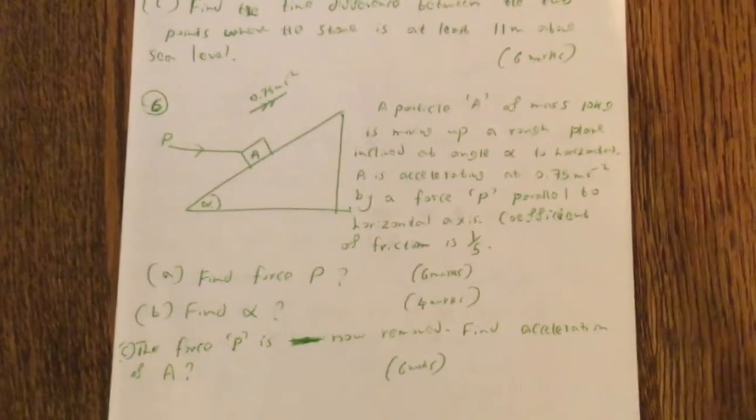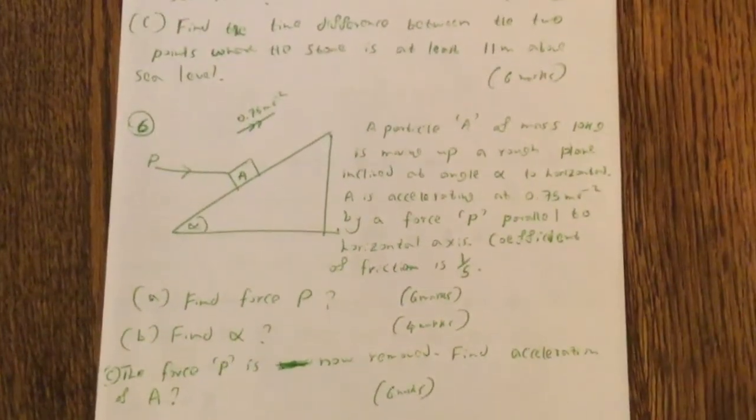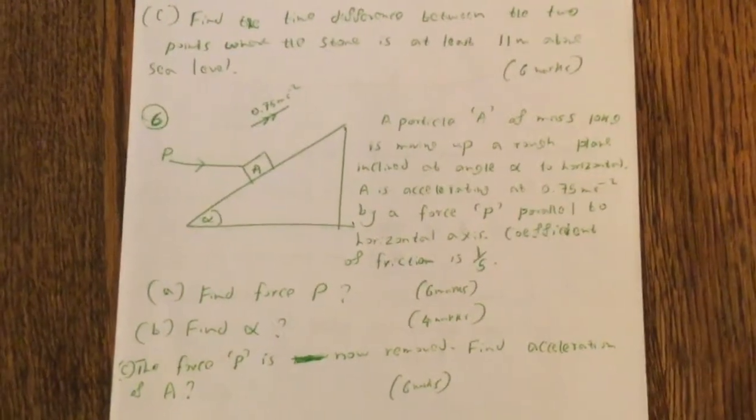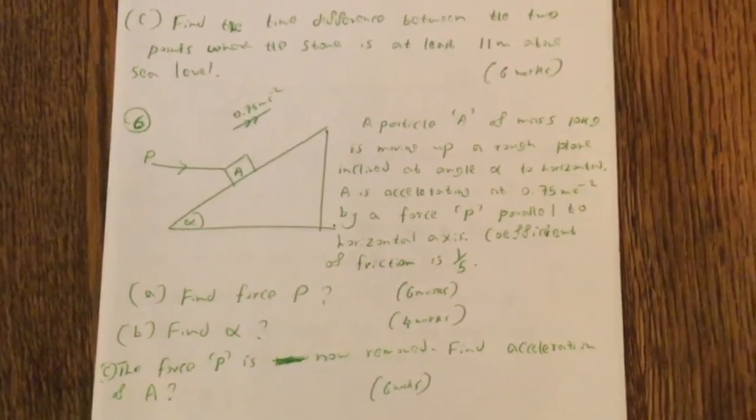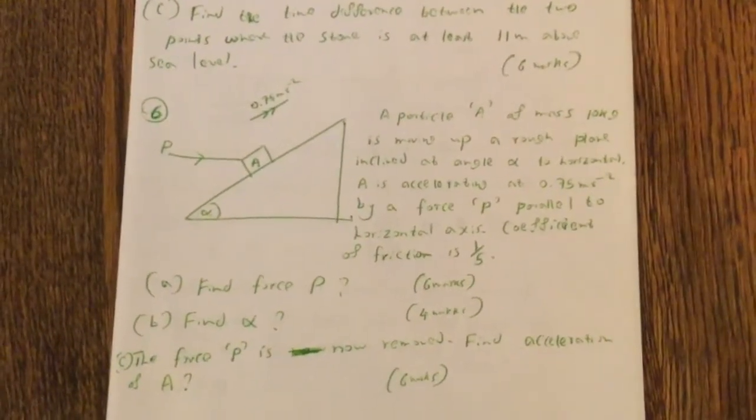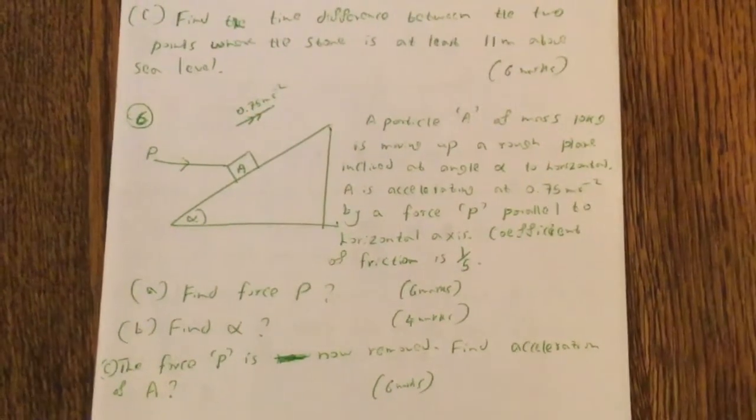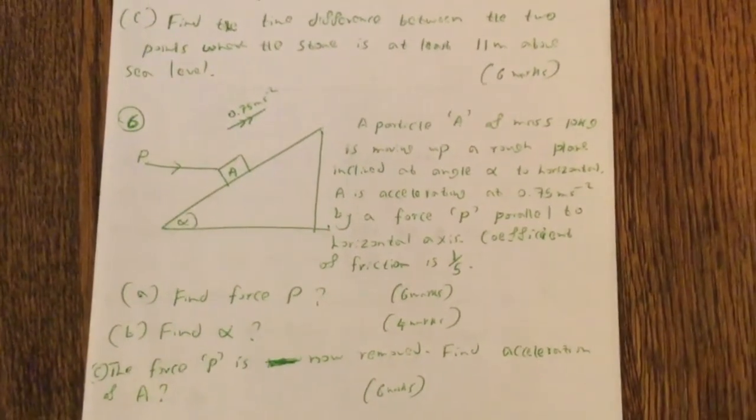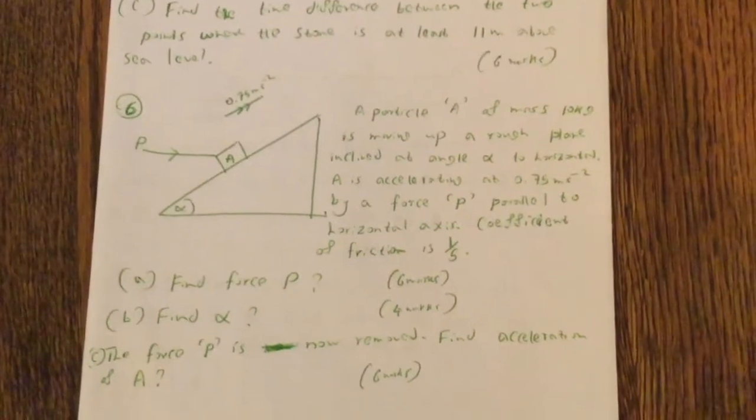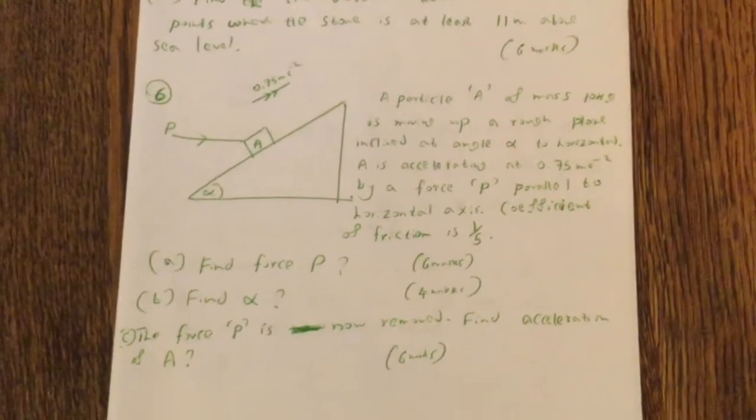A particle A of mass 10 kg is moving up a rough plane inclined at angle alpha to horizontal. A is accelerating at 0.75 meters per second squared by a force P parallel to the horizontal axis. Coefficient of friction is 1 over 5.